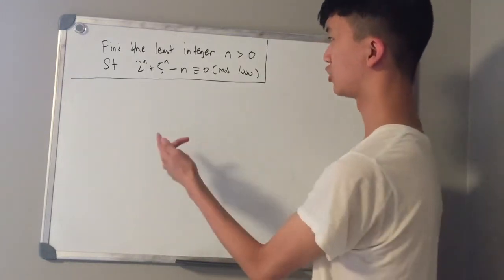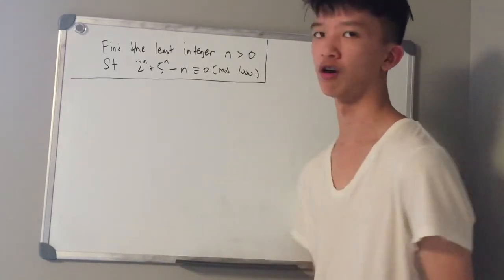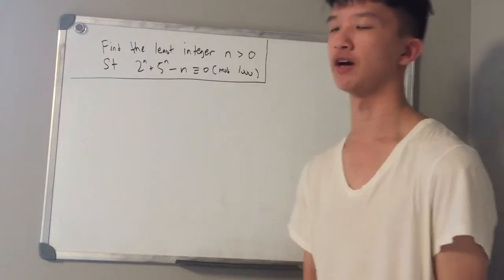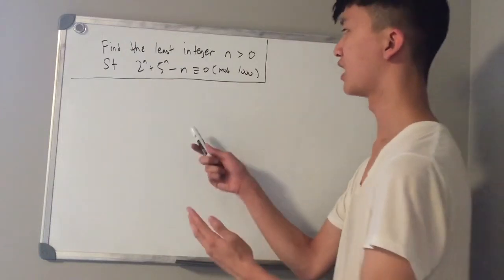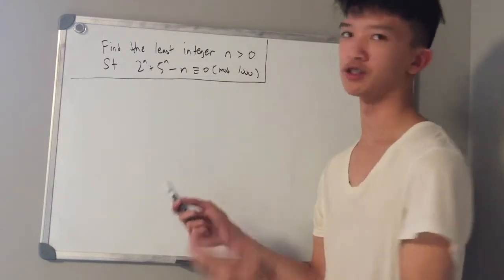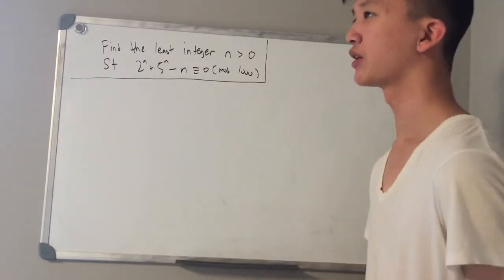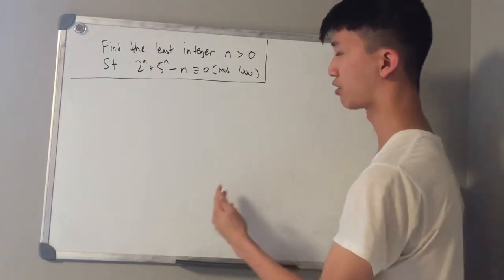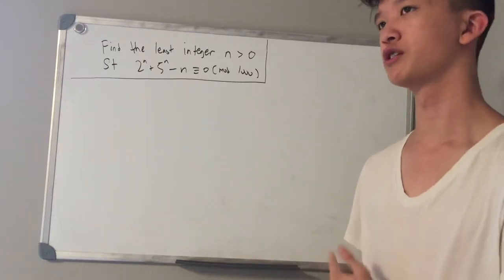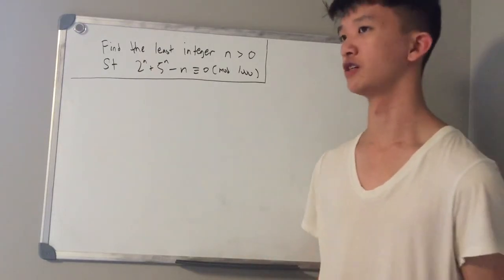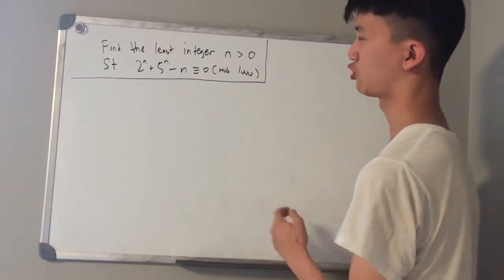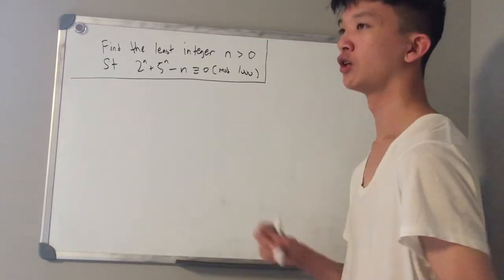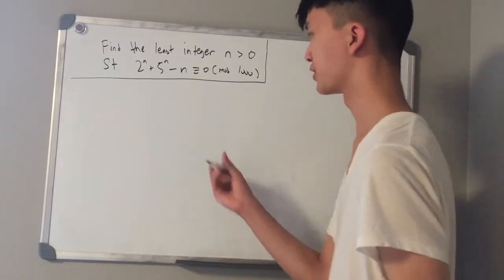We want to find the least integer greater than 0 such that 2 to the power of n plus 5 to the power of n minus n is equal to 0 mod 1,000. The first thing to note is that if something is equal to 0 mod n, then it is also equal to 0 mod all of its divisors. Since 8 and 125 are divisors of 1,000, we can set up the following two equations.